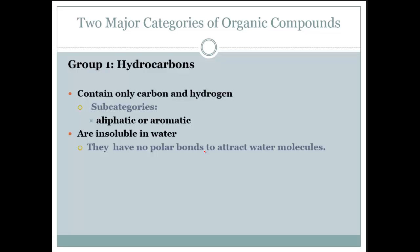There are two categories of organic compounds. The first one is hydrocarbons. They contain only carbon and hydrogen. They have subcategories of aliphatic and aromatic. They're insoluble in water because they're nonpolar. They have no polar bonds to attract the water molecules.